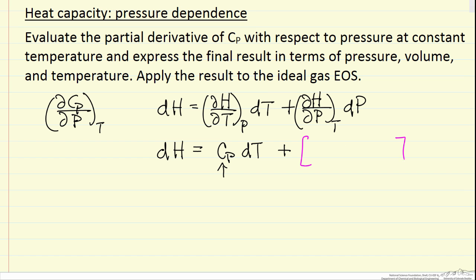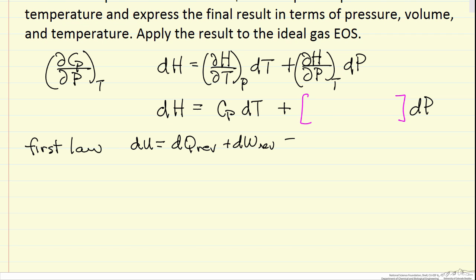To get that right-hand term, let's go back to the first law. I'm going to write the first law for a reversible process. Because it's reversible, dQ reversible is TdS, and work for a reversible process is PdV.